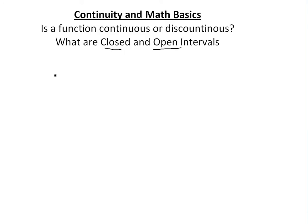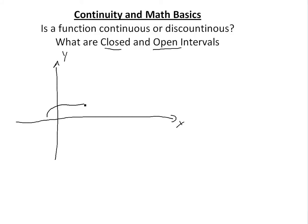Basically, continuity — if you have a function, let's call this x and this is y, a continuous function is just one without any breaks inside. So if you have something like this, this would be continuous over this interval. This is continuous because there are no breaks in the function.